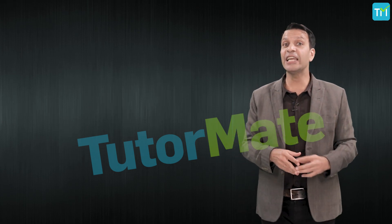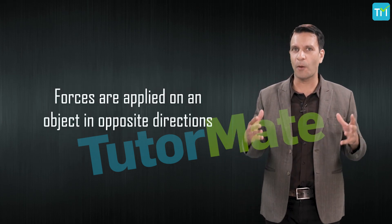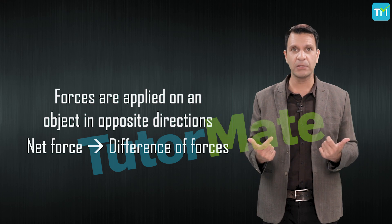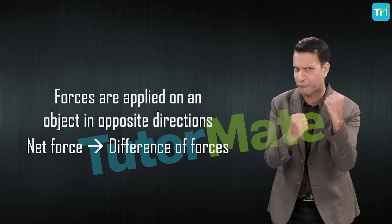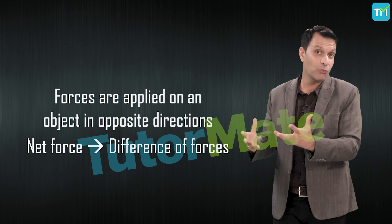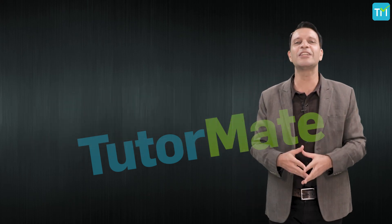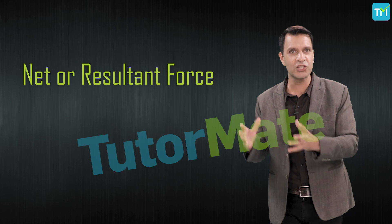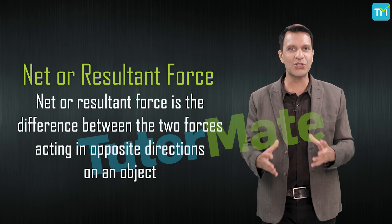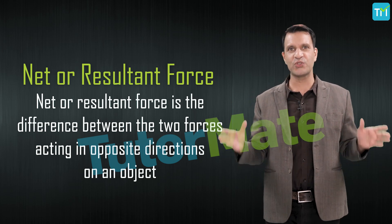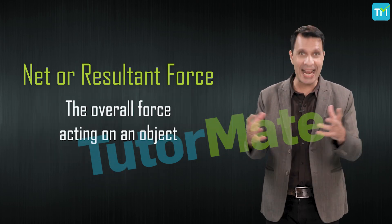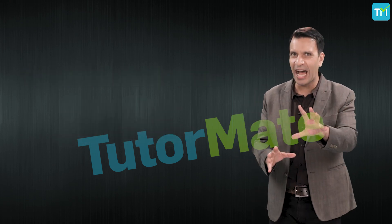When forces are applied in opposite directions, the net force is the difference of both forces. If you are stronger and have applied more force, you will push the box in your direction, or vice versa. The net or resultant force is the difference between two forces acting in opposite directions on an object — in other words, it is the overall force acting on one object.